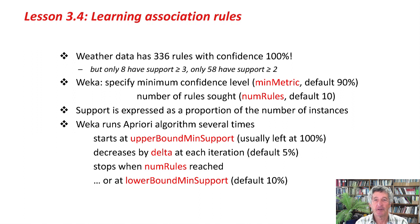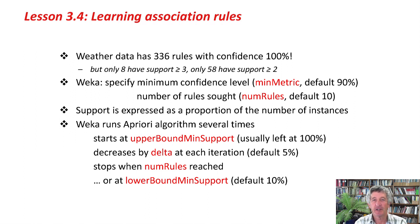Actually, the weather data has 336 rules with confidence of 100%. The reason why it works in this slightly crazy way is that if you started looking at high-confidence rules, you'd find huge numbers of very low support, very high-confidence rules. From a large data set, you'd have massive numbers of 100% confidence rules that weren't very interesting because they had tiny support.